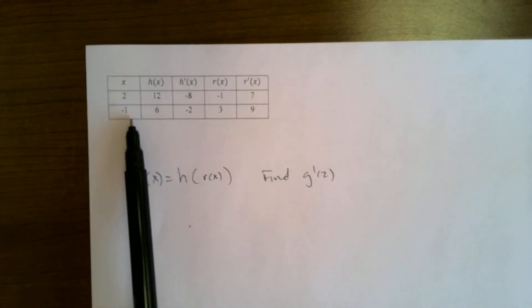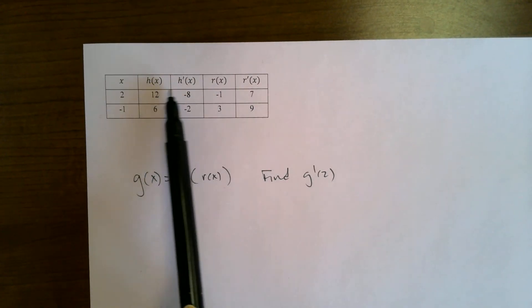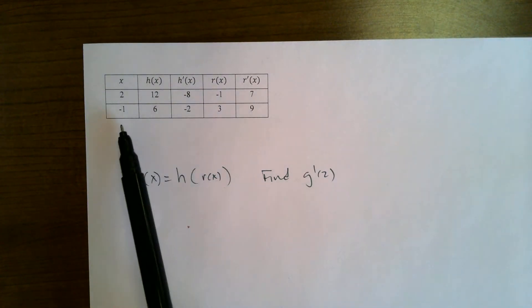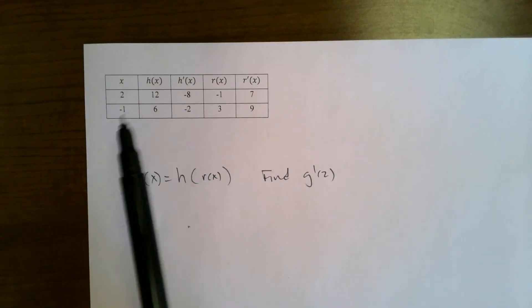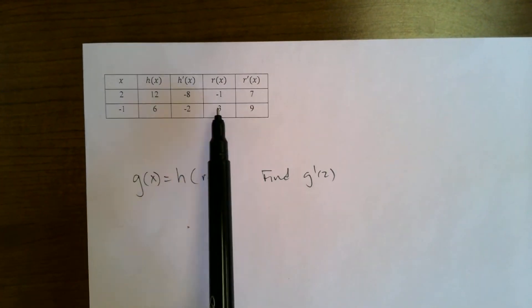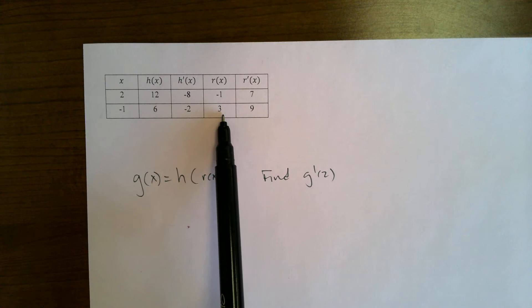These are the inputs x, negative one, two, and three. Here are the outputs for h(x), h'(x), r(x), and r'(x). So for example, if you wanted r of negative one, you know, here's negative one, you'd go over to the r column. So r of negative one is three.